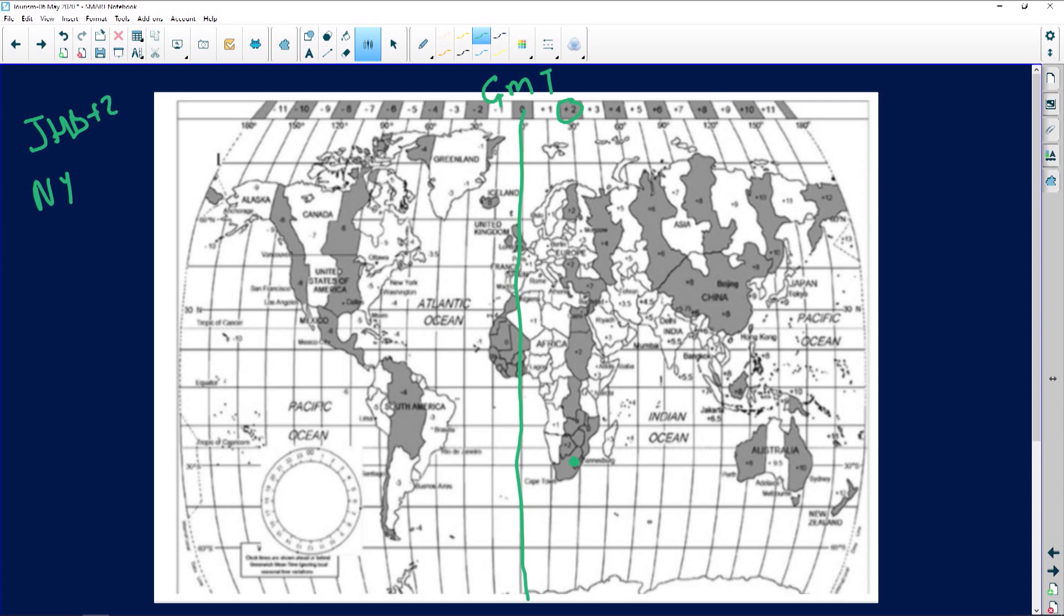If we look for New York we go all the way to America and you'll see we find New York. If we go all the way up in that white space you'll find a minus five, so New York is minus five.